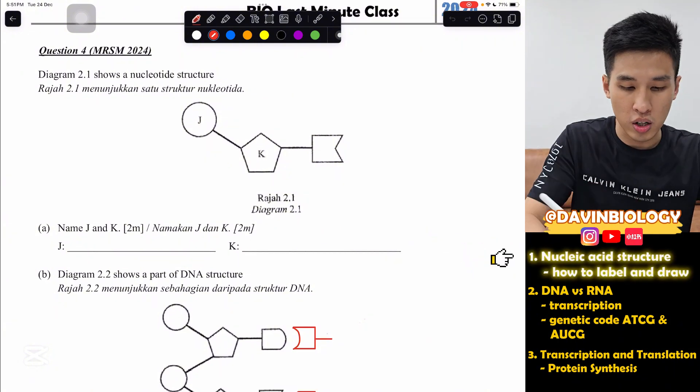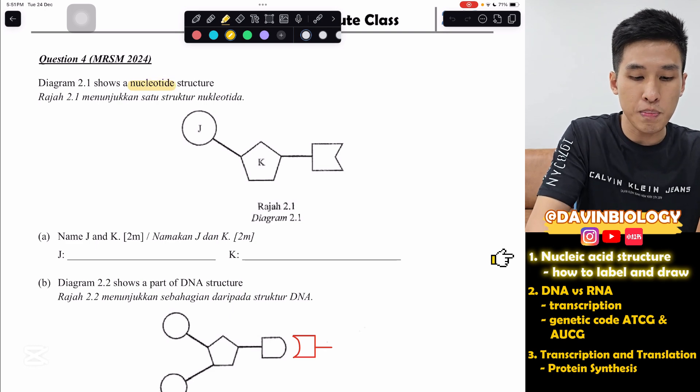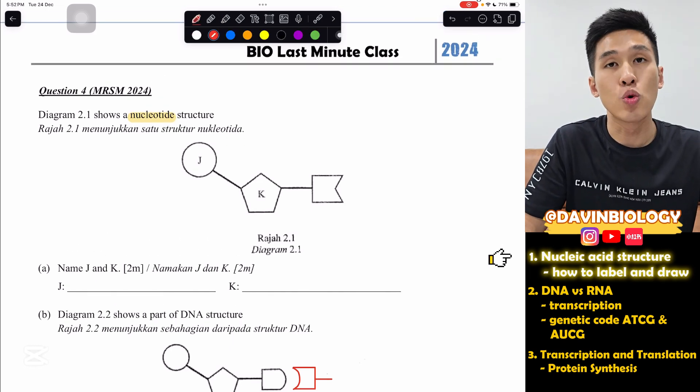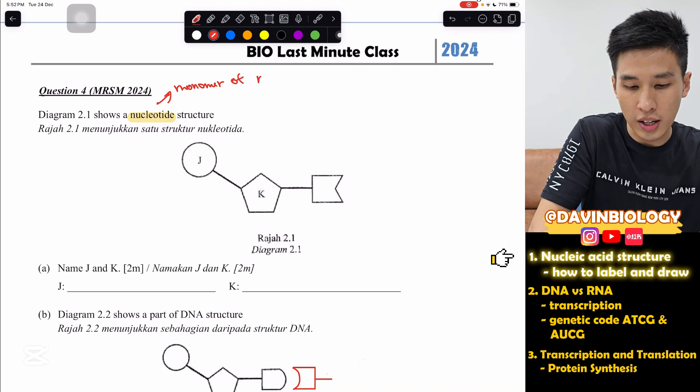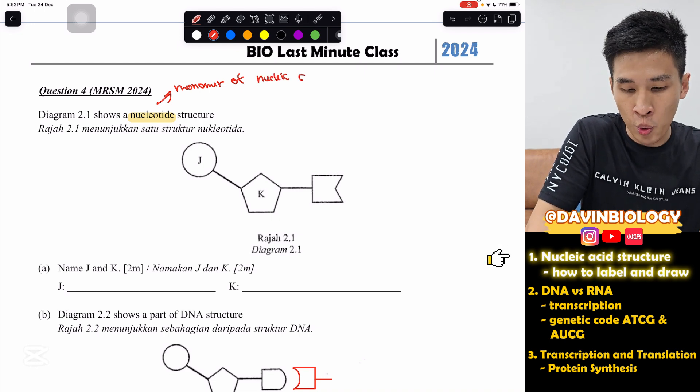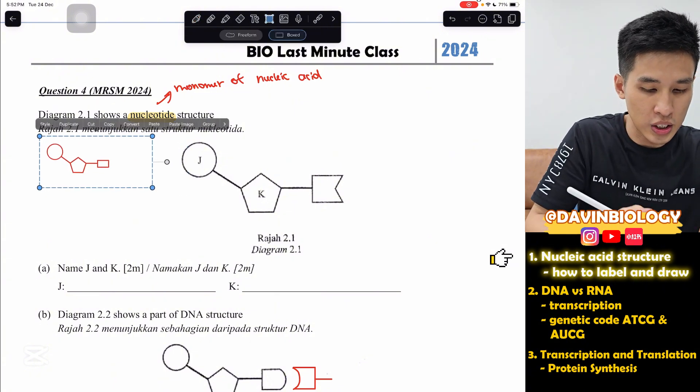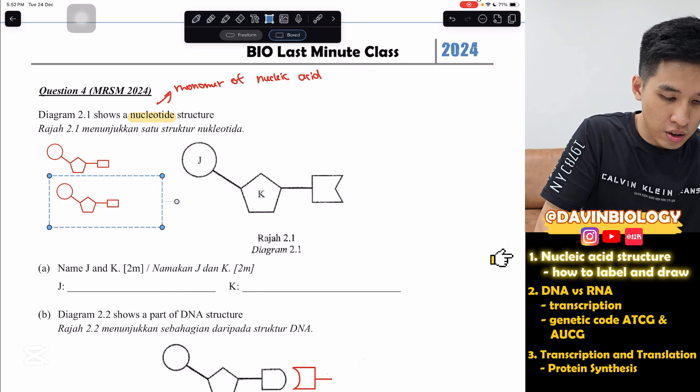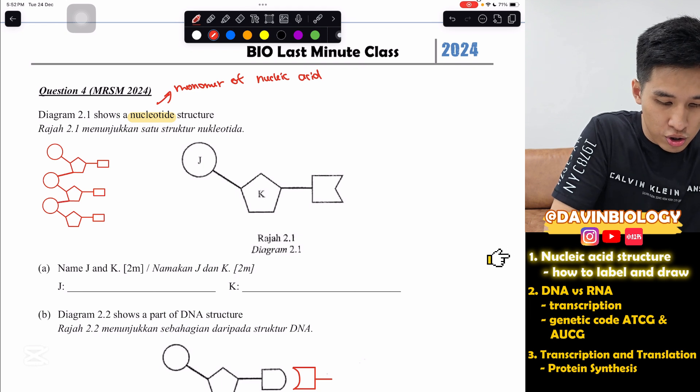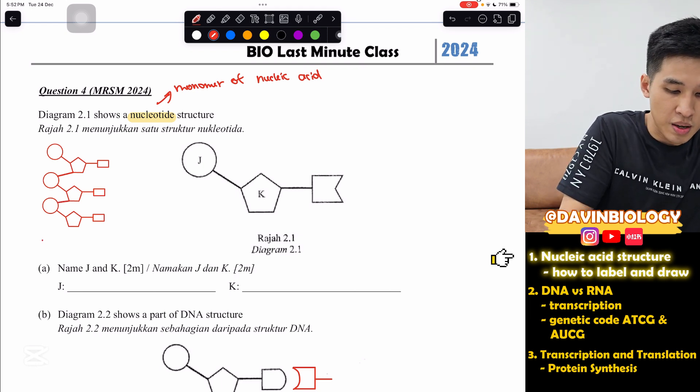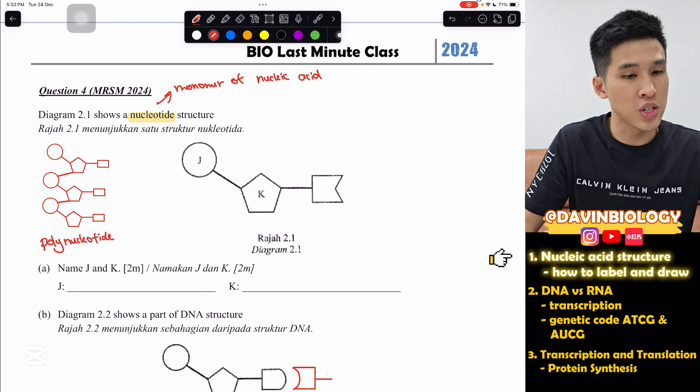So for this question, MRSM 2024, the most basic thing they will ask you is, they'll give you a nucleotide. Now what's nucleotide? Nucleotide basically is the monomer of a nucleic acid. So monomers basically forms a polymer. Nucleotide like this is the monomer. So basically a lot of nucleotide, if they join together, a lot of monomer, a lot of this nucleotide join together, you'll get what we call as a polynucleotide.